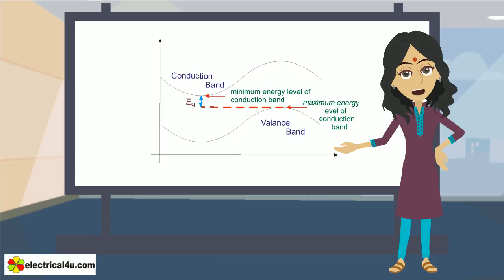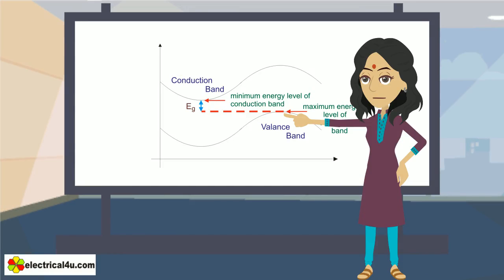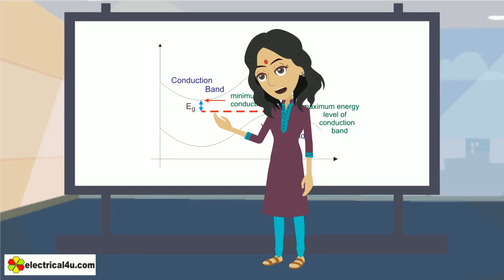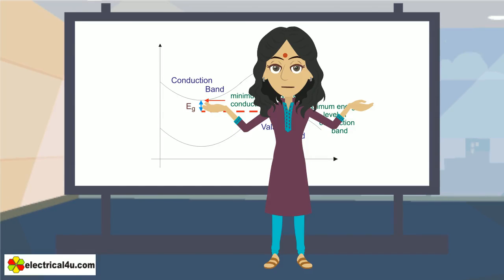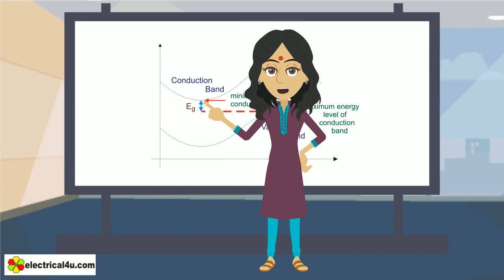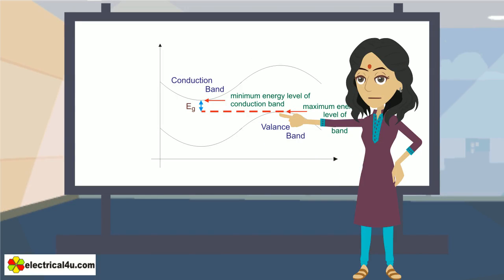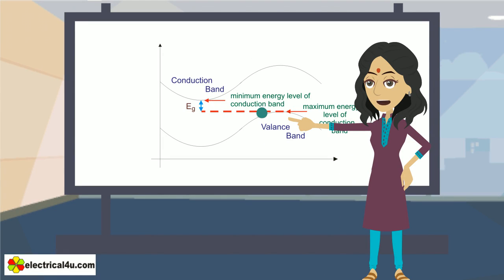In indirect gap semiconductor, the maximum energy level of valence band and minimum energy level of conduction band do not occur at the same momentum of electrons. Hence, during recombination of electrons and holes, i.e. migration of electrons from conduction band to valence band, the momentum of electrons would be changed.